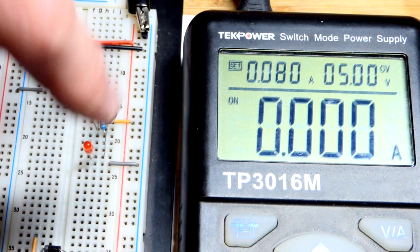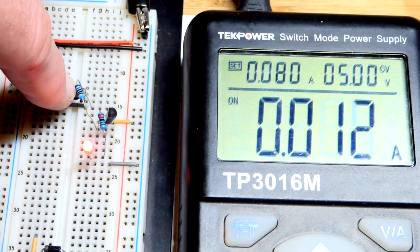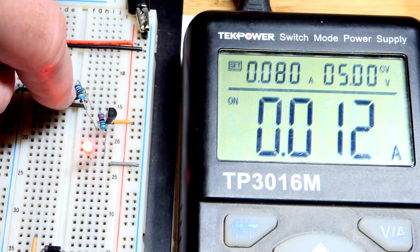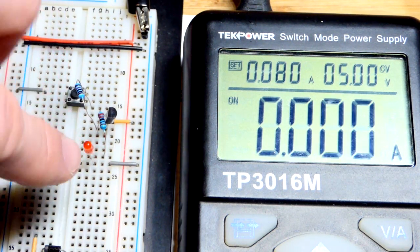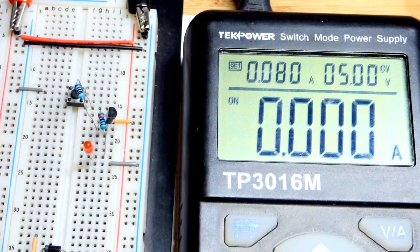It's no current from base to emitter, no current from collector to emitter. And then just a very small current from base to emitter allows a lot more collector to emitter current, which the LED is part of. It's in series. That's the basics of a transistor switch.